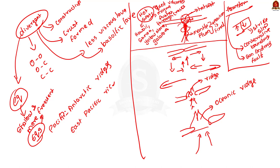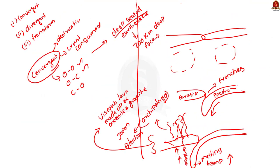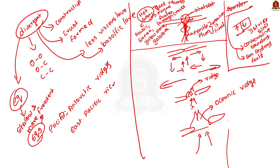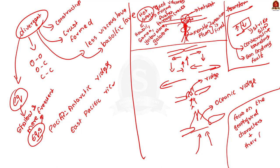Now we have seen all the important geophysical characters along the circum-pacific zone with examples. In your answer, just focus on the geophysical characters, one or two sentences about how they form, and some examples. Since this is a 10 marker, this would be fine. Remember to use diagrams and maps in your answer.